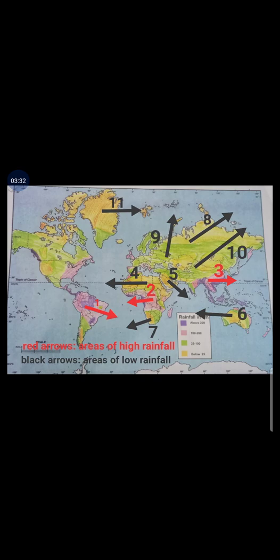Now let us move to the black arrows — they show the areas of low rainfall. Number four is showing us the area of tropical deserts, that is the Sahara Desert, which receives very low rainfall. Number five is showing us the Arabian Desert, also a tropical desert. These are called tropical deserts because they are near the Tropic of Cancer.